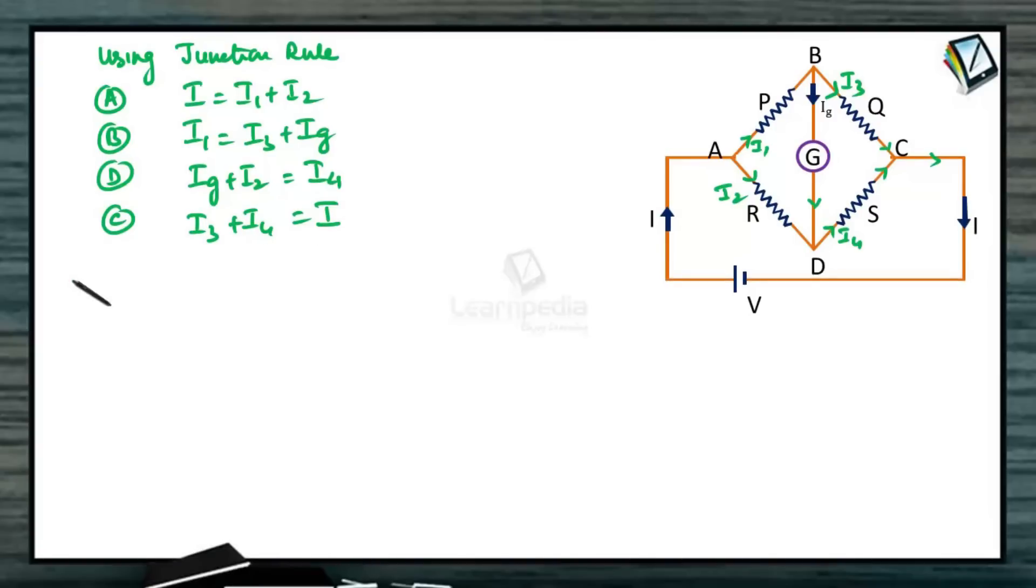Now we can use loop rule. Loop 1 we can take it as ABD back to A. So what we are going to get, minus I1P minus IGG plus I2 into R is equal to 0. Similarly, we can apply second loop rule to the bigger junction, ABCD back to A. We can write minus I1P minus I3Q plus I4S plus I2R is equal to 0.